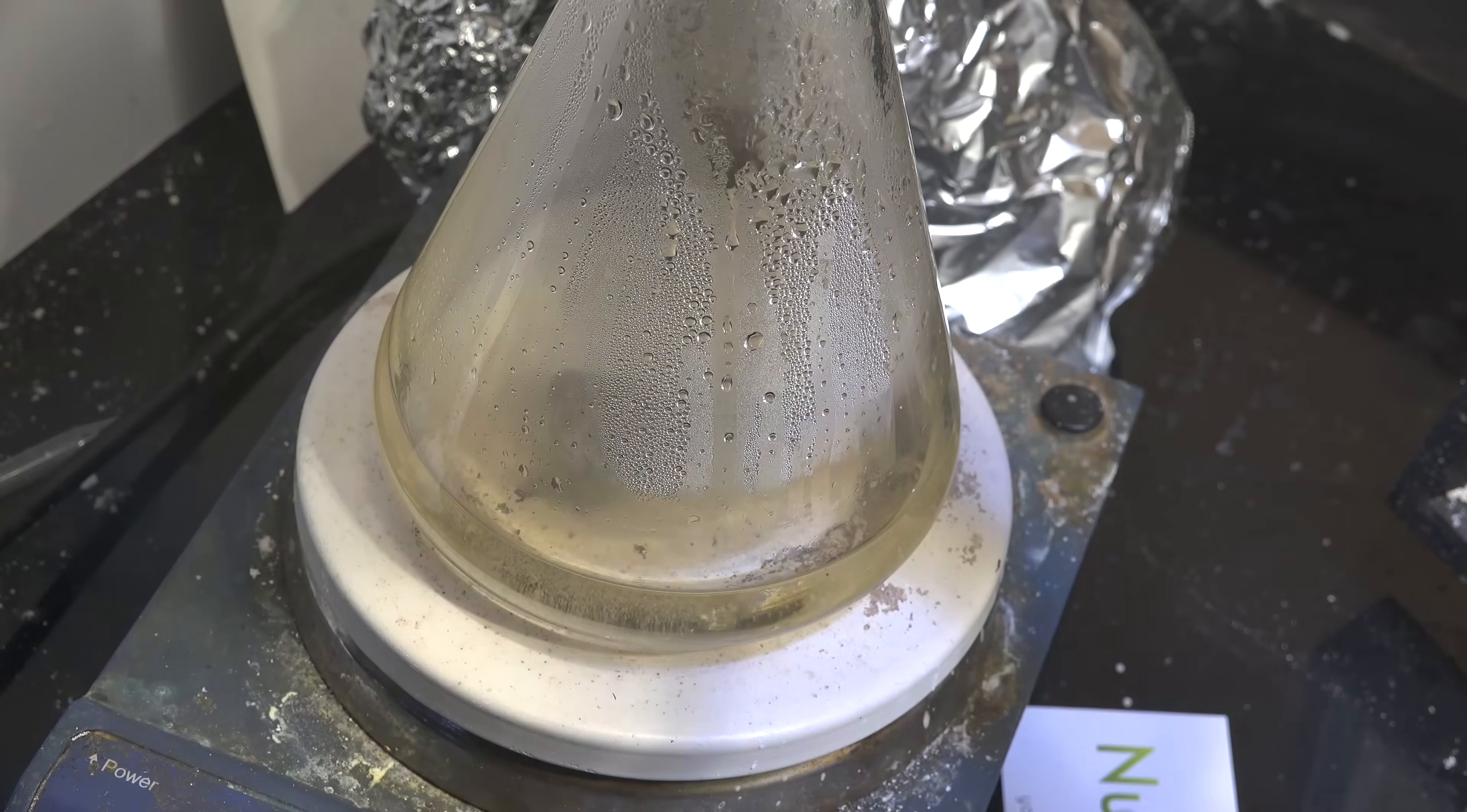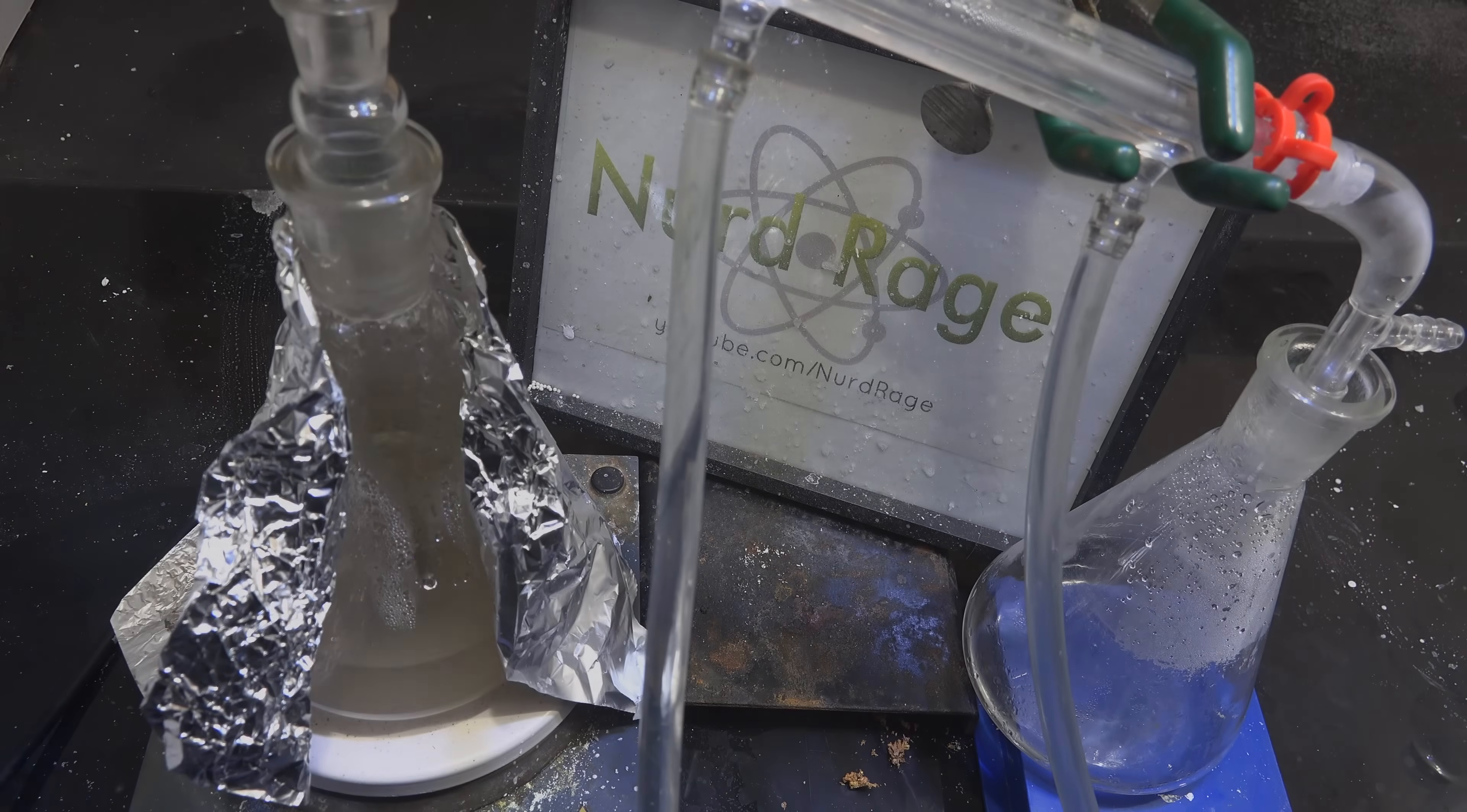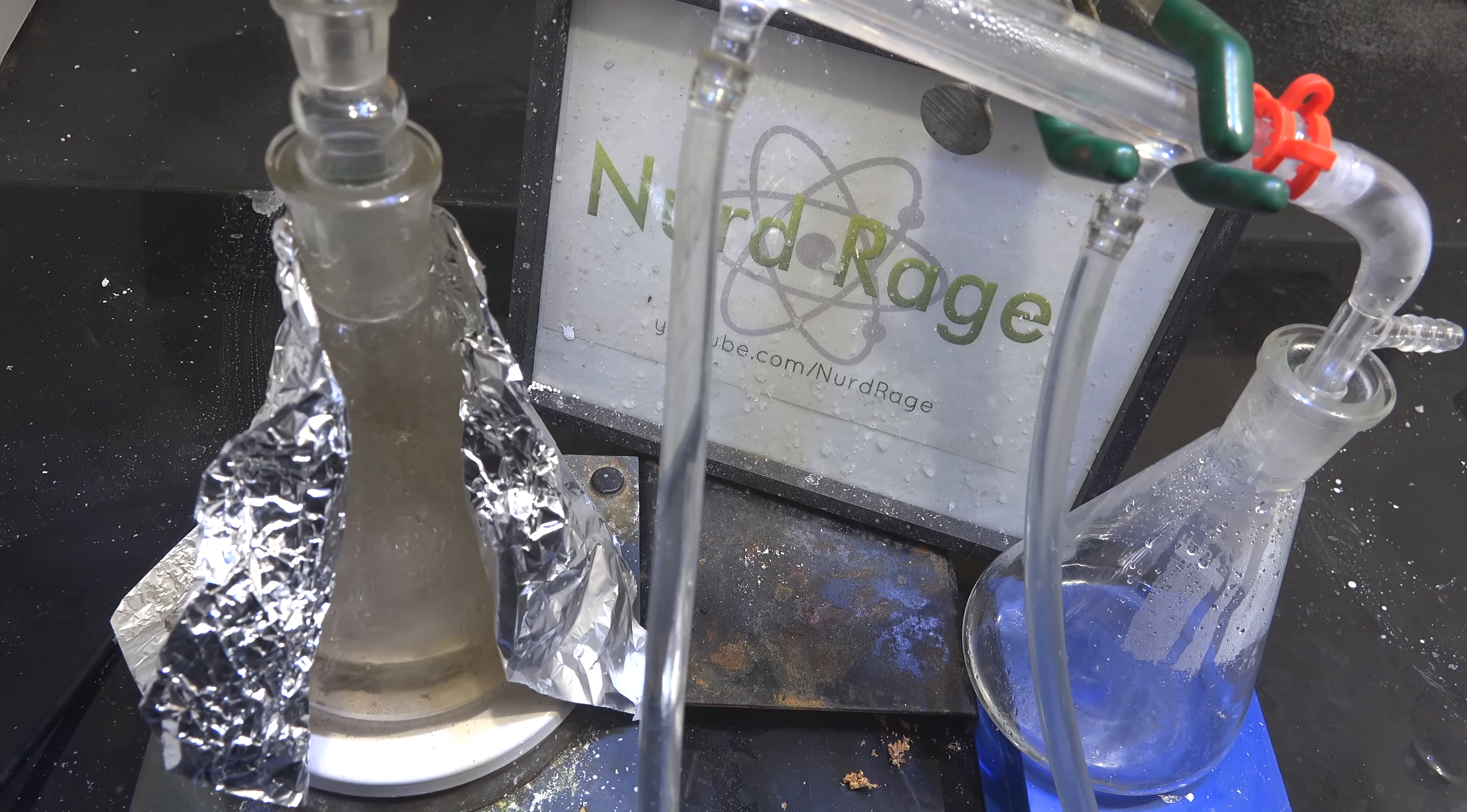Now let it cool and then add in another 100 g portion of oxalic acid dihydrate. Now replace the condenser apparatus and start heating again.